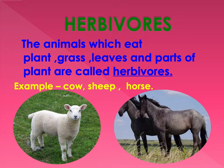Herbivores. The animals which eat plants, grass, leaves and parts of plants are called herbivores. Some of the examples are cow, sheep, horse, etc.